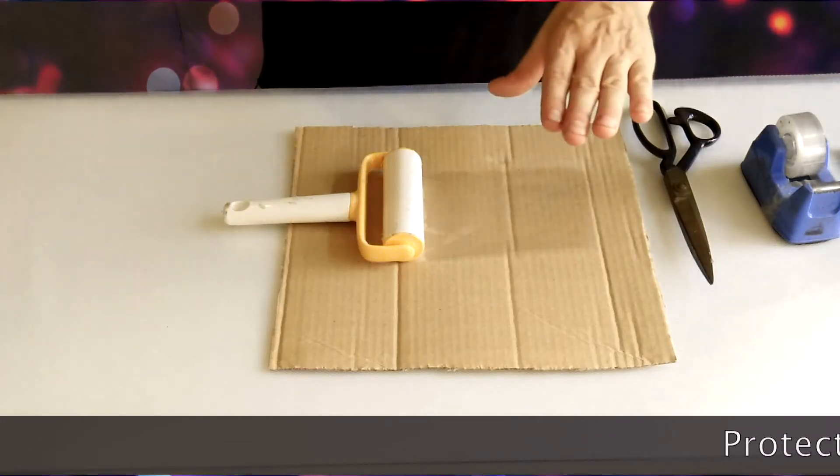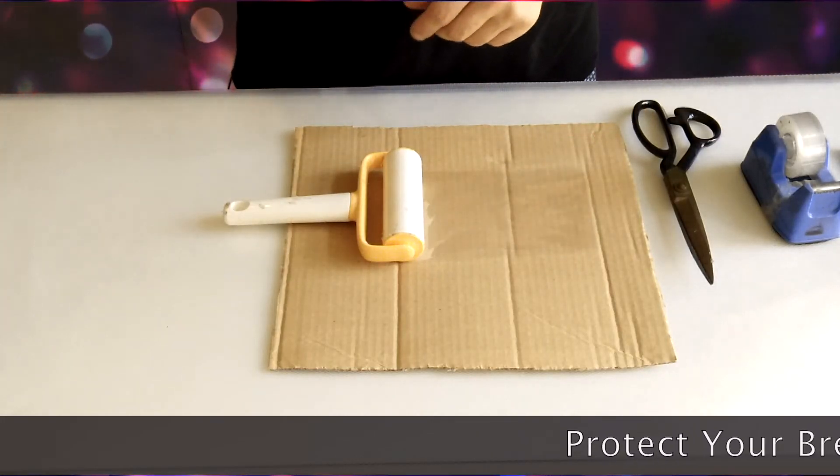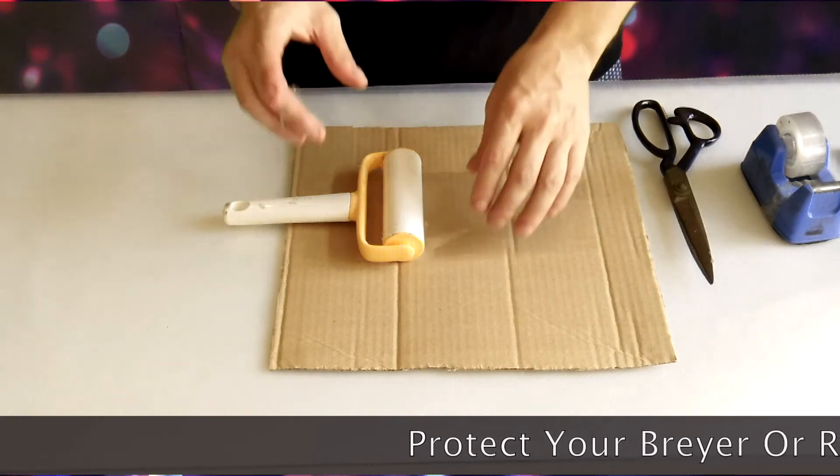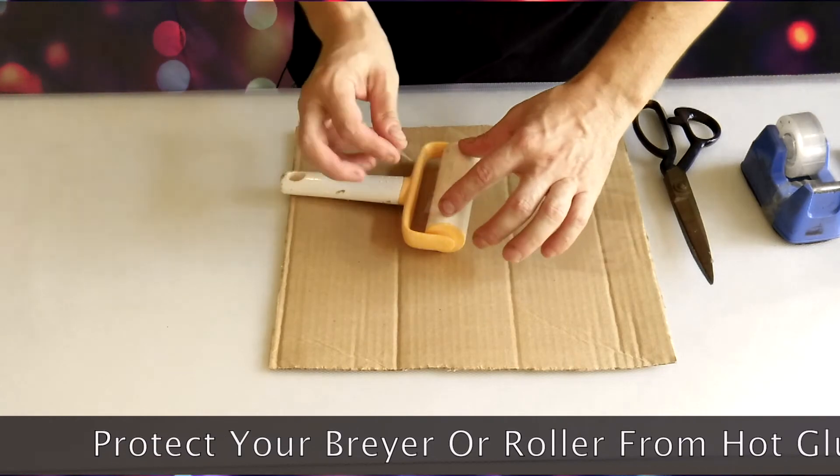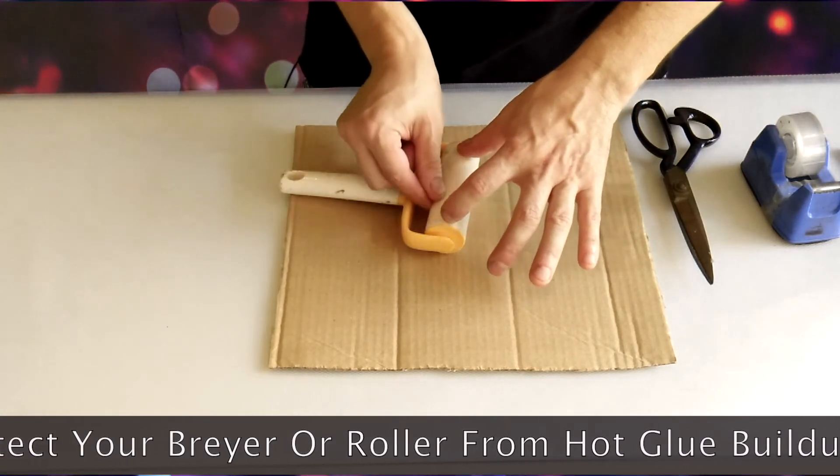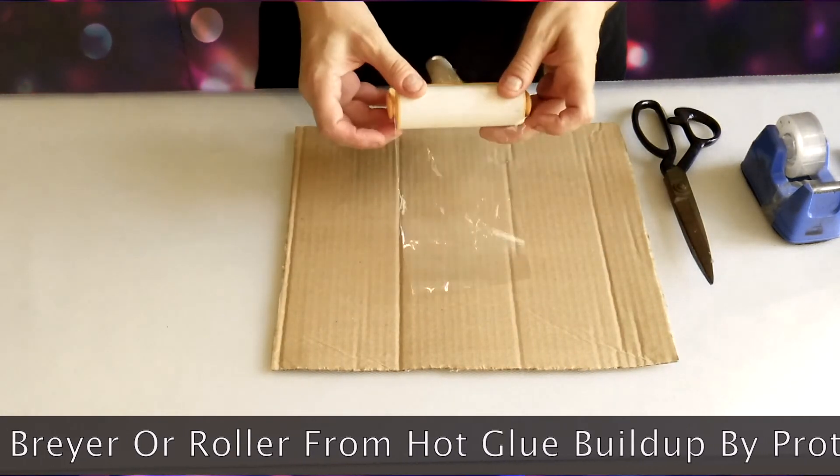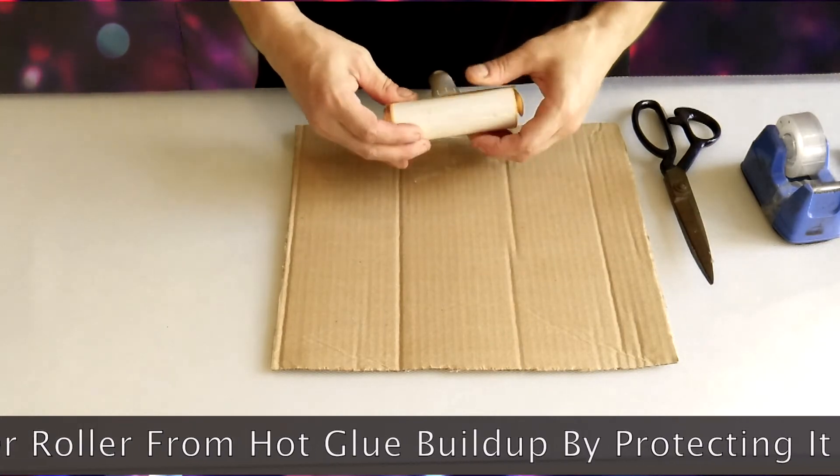To keep your brayer clean and not gummed up from the hot glue, I just tape a piece of plastic to the roller. And this is just a piece of plastic from discarded packaging. Put a piece there and just roll it around the brayer.